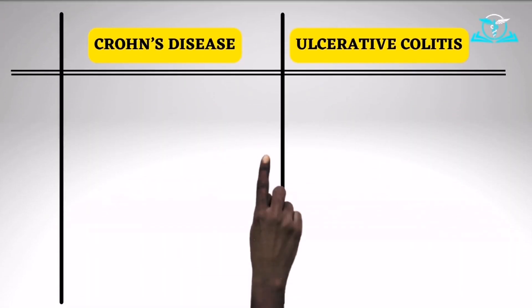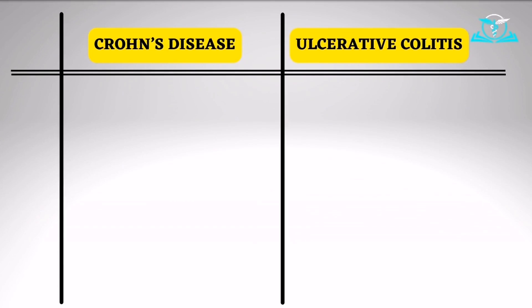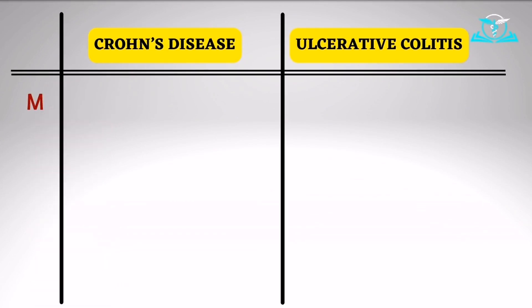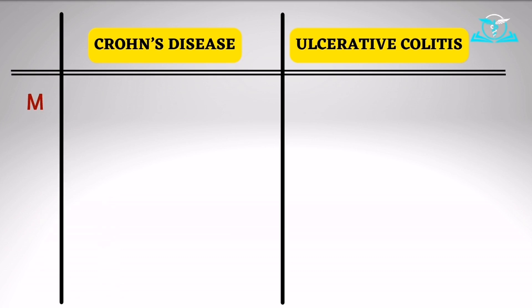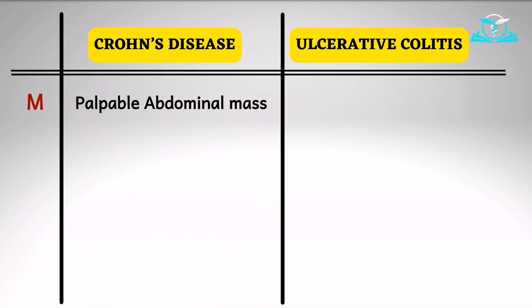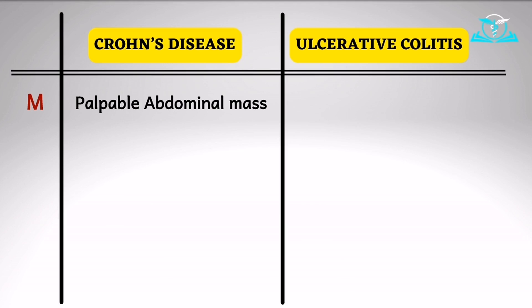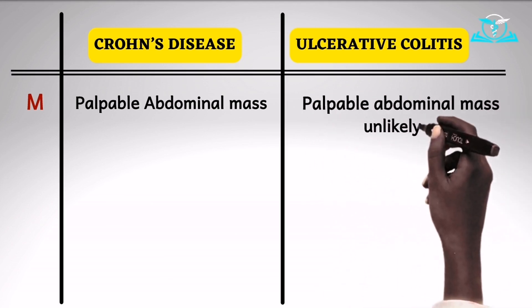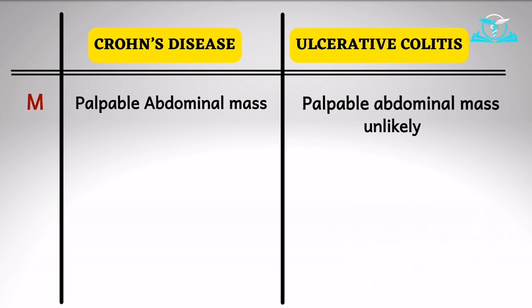Let's begin our differentiation. M stands for mass. Between Crohn's disease and ulcerative colitis, which is likely to be associated with a palpable abdominal mass? Crohn's disease is likely to have a palpable abdominal mass, while in ulcerative colitis, a palpable abdominal mass is unlikely.